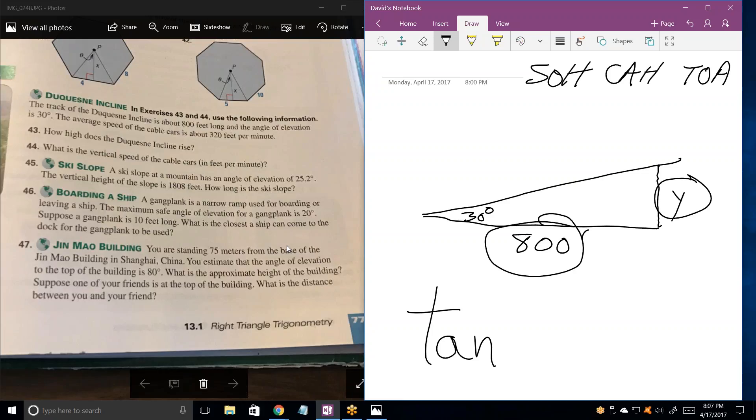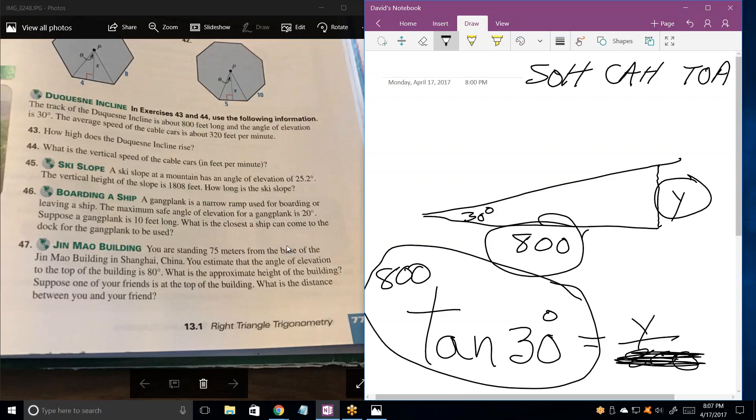When you're solving these trig problems, always try to start with the trig. Tan of what? Equals what? So tan is equal to y over 800. Tan of an angle. You're always taking trig functions of angles. So tan of 30 equals y over 800. Y equals 800 times the tan of 30. Go ahead and get that number out of your calculator.